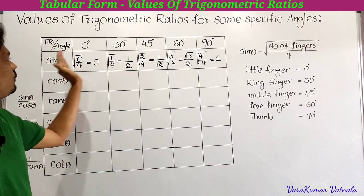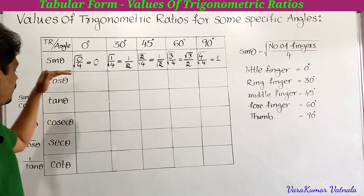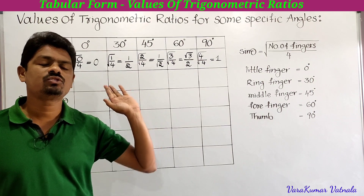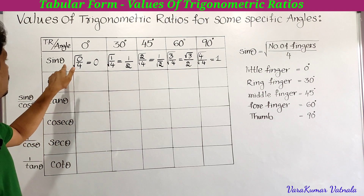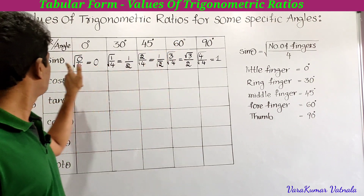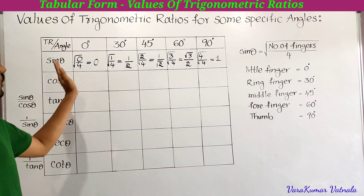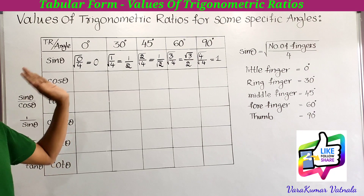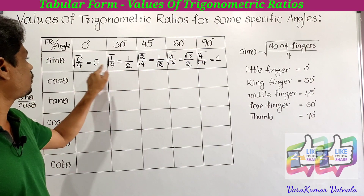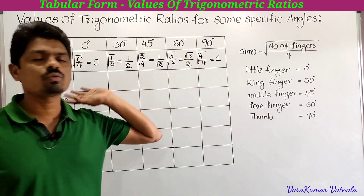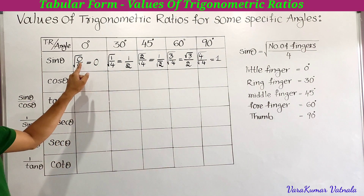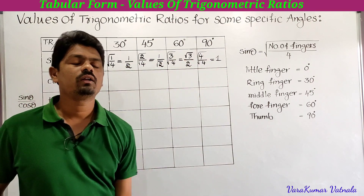This is very very important. If you write the sine values first, you can write all the remaining trigonometric ratios very easily. So read: sin 0° = 0, sin 30° = 1/2, sin 45° = 1/√2, sin 60° = √3/2, sin 90° = 1. Remember the steps: write 0, 1, 2, 3, 4; divide each by 4; apply square root.